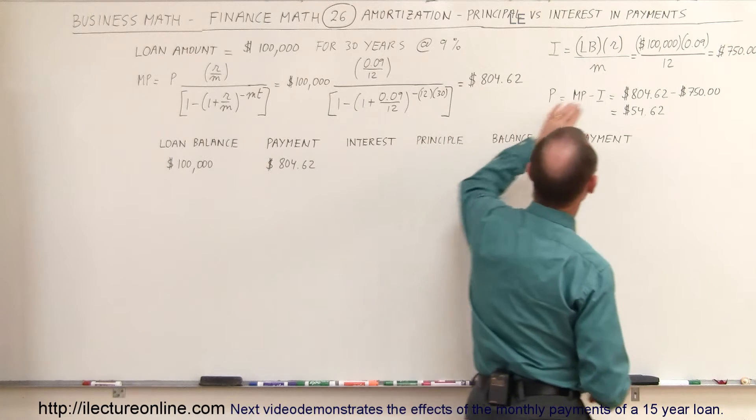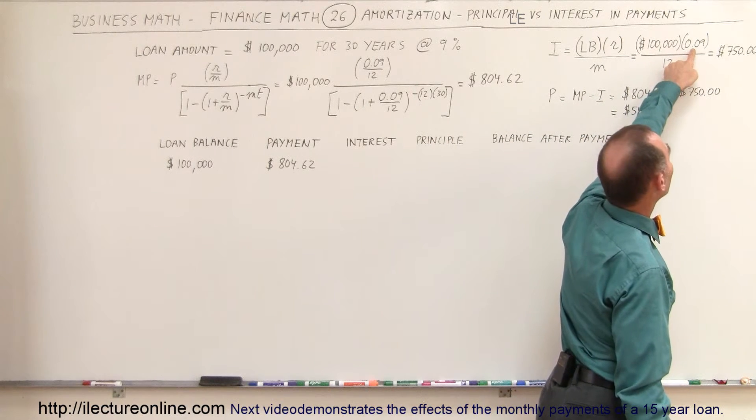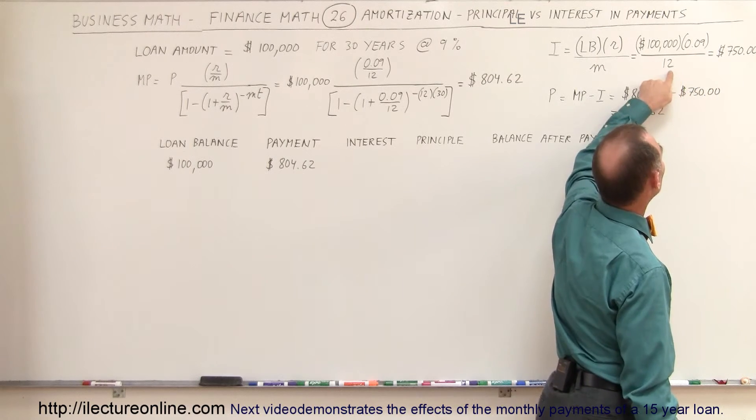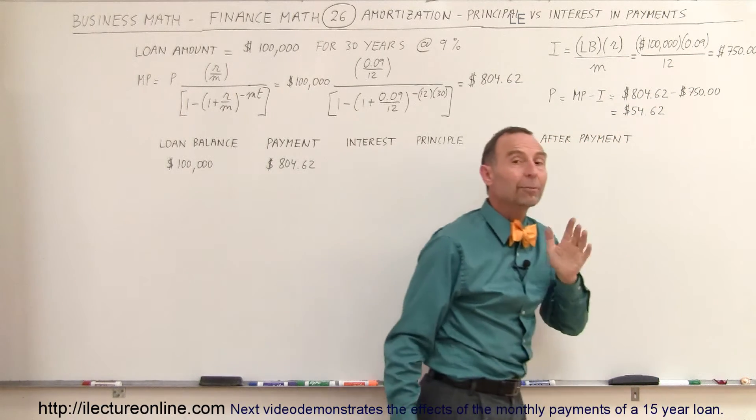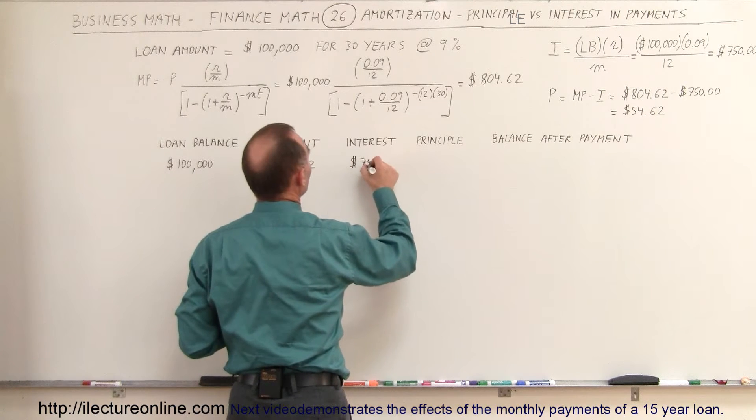So in this case, for the first payment, the loan balance will be $100,000. The rate is 9%, 0.09, and the number of months is 12. That's a $750 payment going into interest. So the interest payment out of that payment will be $750.